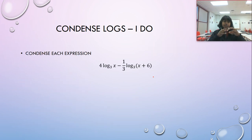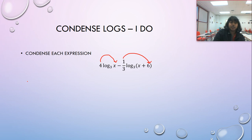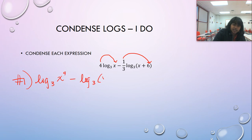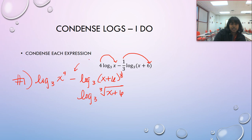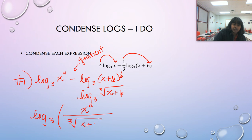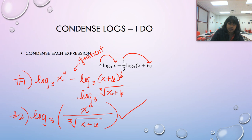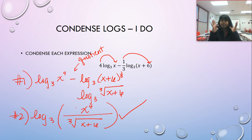Moving on to condensing — if we can expand, we can work backwards. For four times log base three of x minus one third times log base three of x plus six: step one, deal with the power rules by converting to log base three of x to the fourth minus log base three of the cubed root of x plus six. Step two, this subtraction is the quotient rule, so it becomes log base three of x to the fourth over the cubed root of x plus six. Same bases confirmed — that is our end answer.